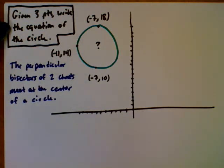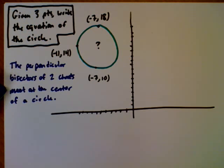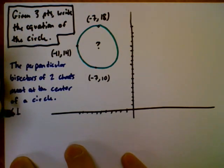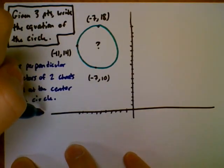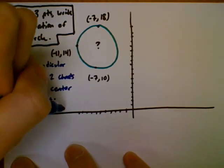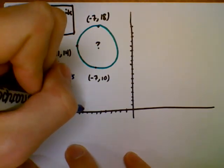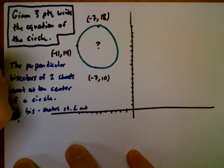So given three points, we want to write the equation of the circle. One key piece of information you need to know: the perpendicular bisectors of two chords will meet at the center of the circle. Remember, a perpendicular bisector makes a right angle and intersects at the midpoint.